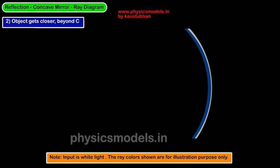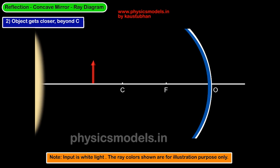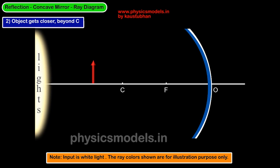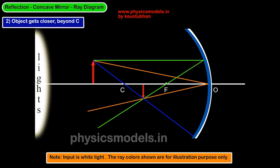Next, we take an object which is getting closer to the mirror — not as far as infinity, but beyond C. Draw the mirror, lay out the principle axis, put C, F and O, and draw an object a little beyond point C. We take a ray which is parallel to the principle axis, a ray which passes through C, and a third ray which hits the center of the mirror. The green ray passing parallel to the principle axis goes through F. The orange ray hits point O — angle of incidence equal to angle of reflection. The ray through C hits the mirror at 90 degrees and goes right back through C. You get an image that is inverted, real, and diminished.